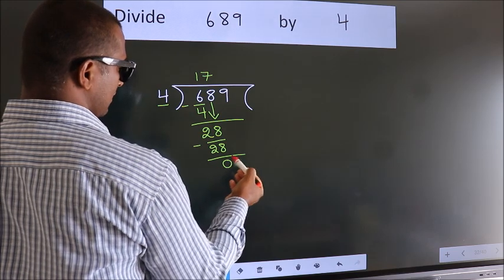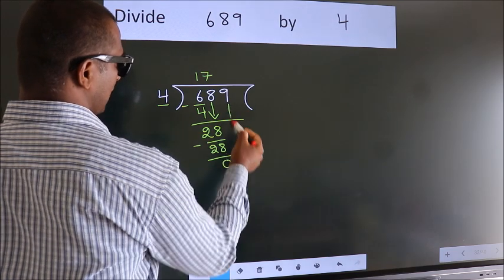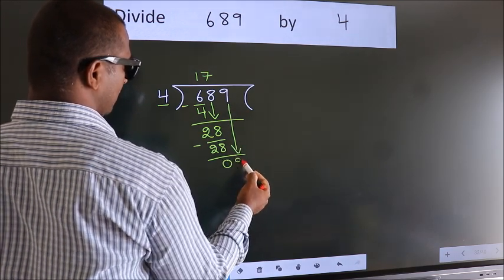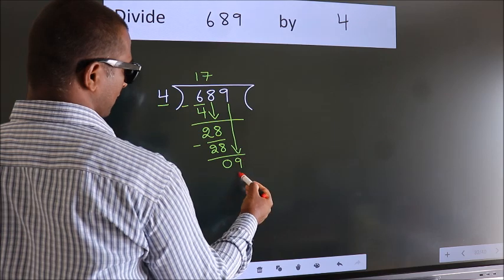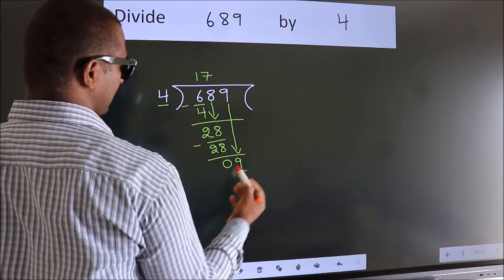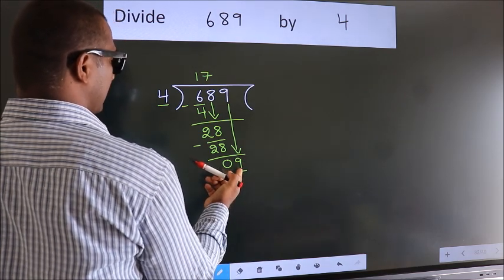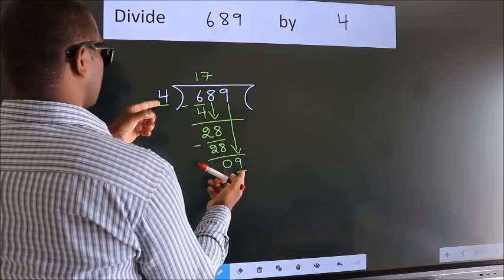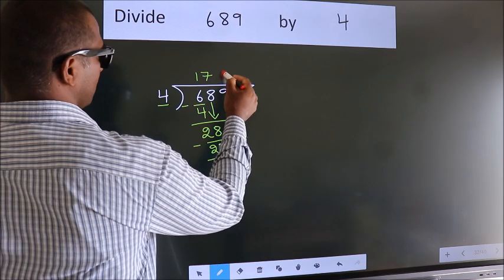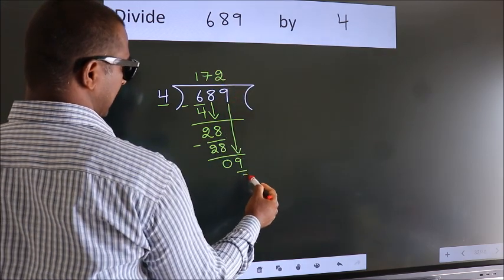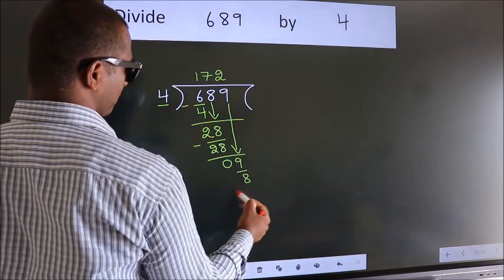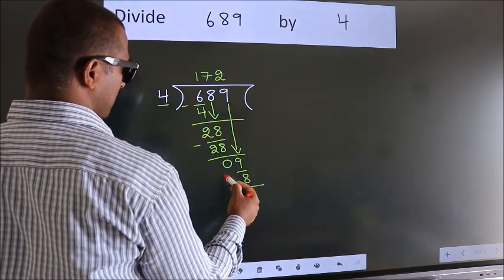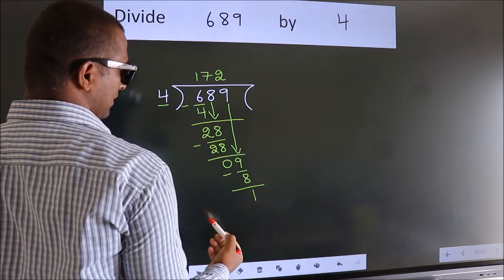After this, bring down the beside number — so 9 down, giving us 9. A number close to 9 in the 4 table is 4 twos, which is 8. Now we subtract. We get 1.